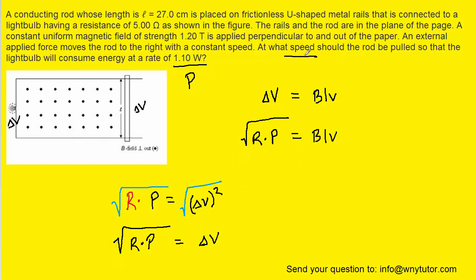And then, since the question is asking for the speed at which the rod should be pulled, we want to solve for this lowercase v right here. And to do that, we can divide both sides by Bl.